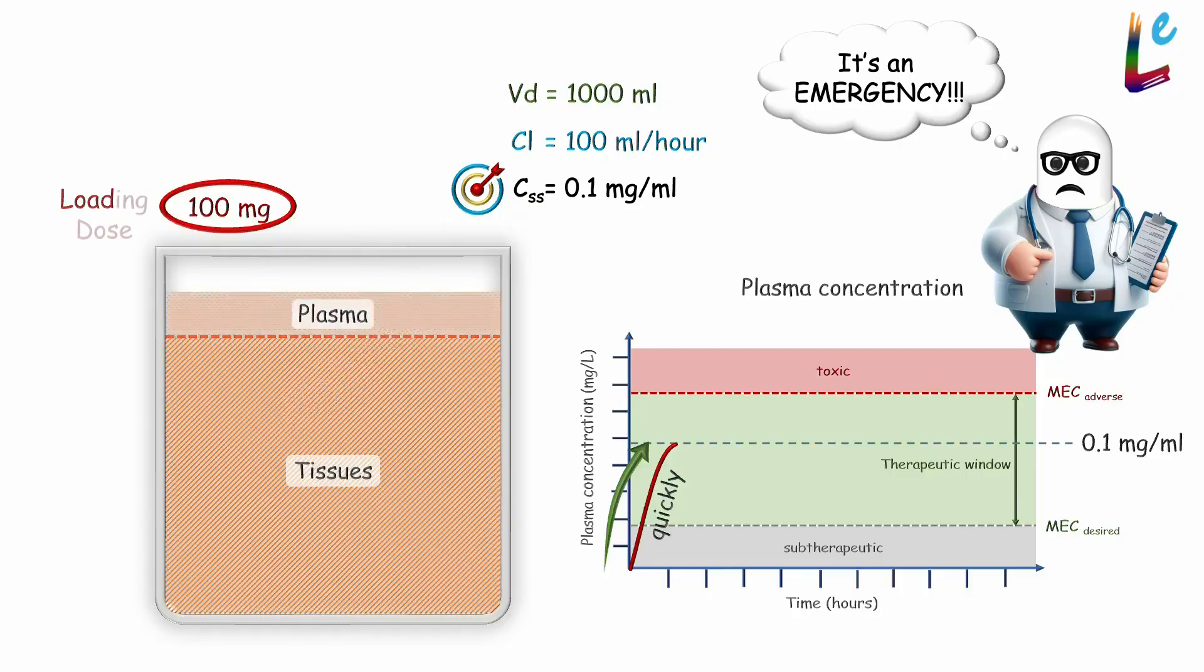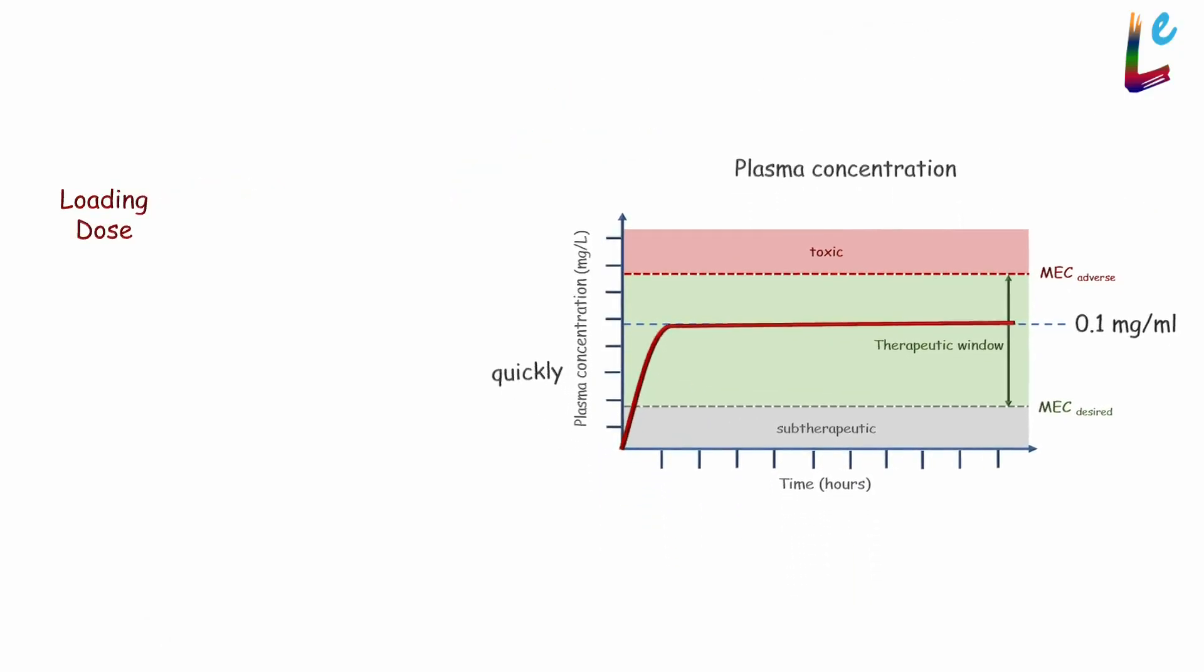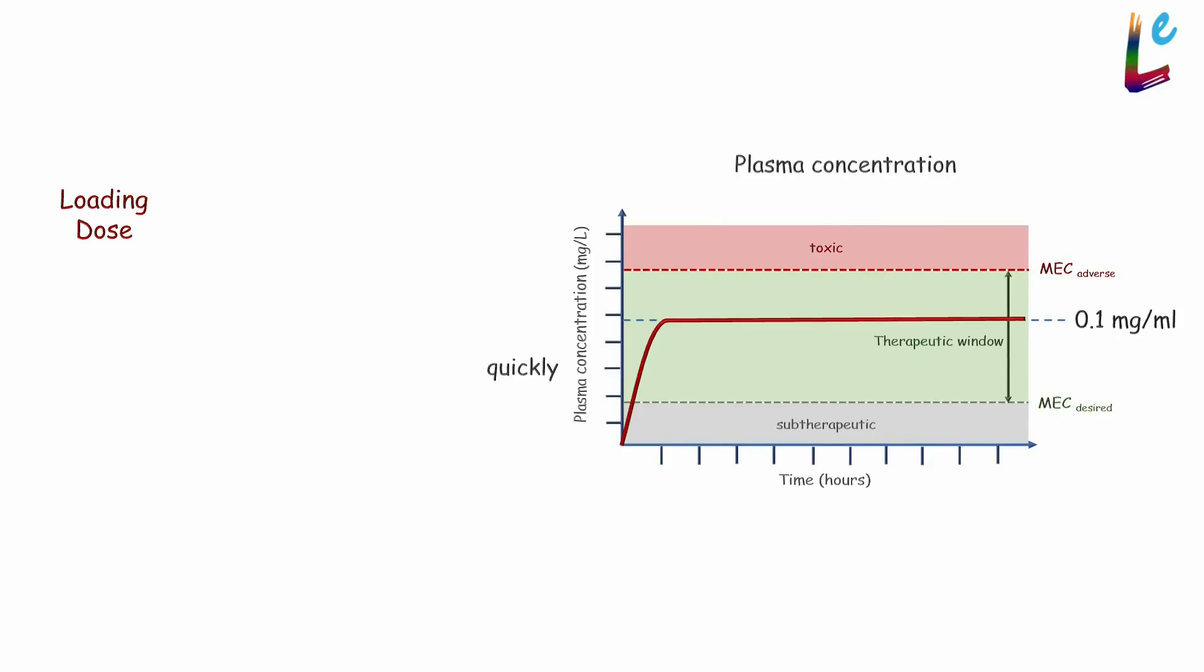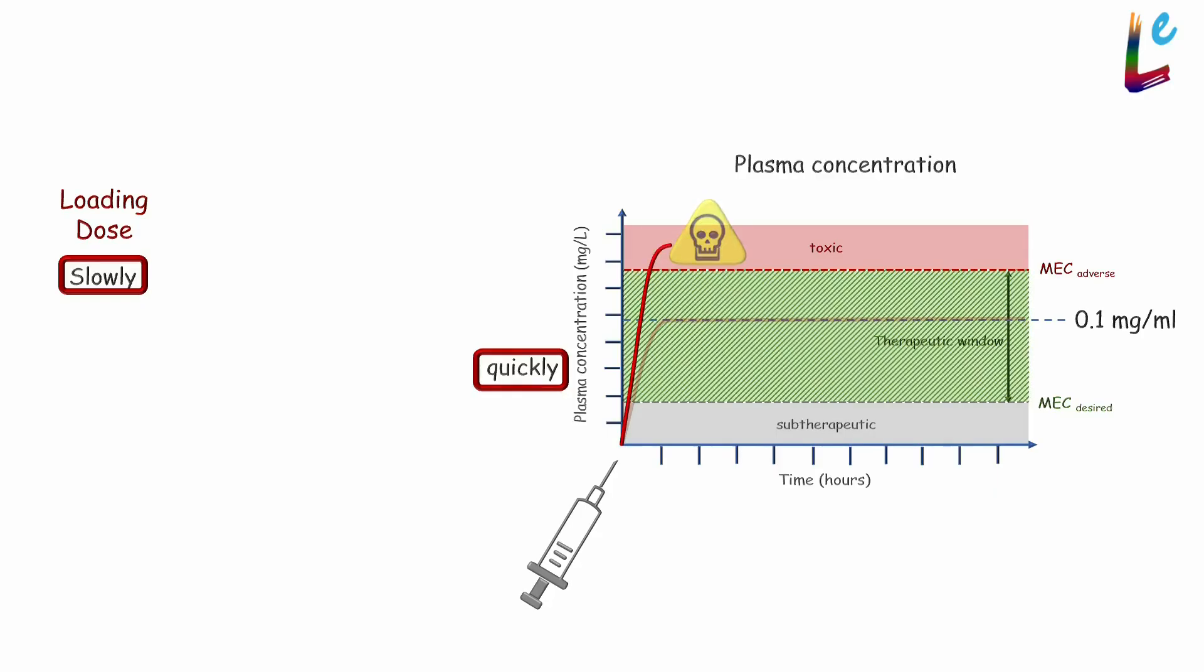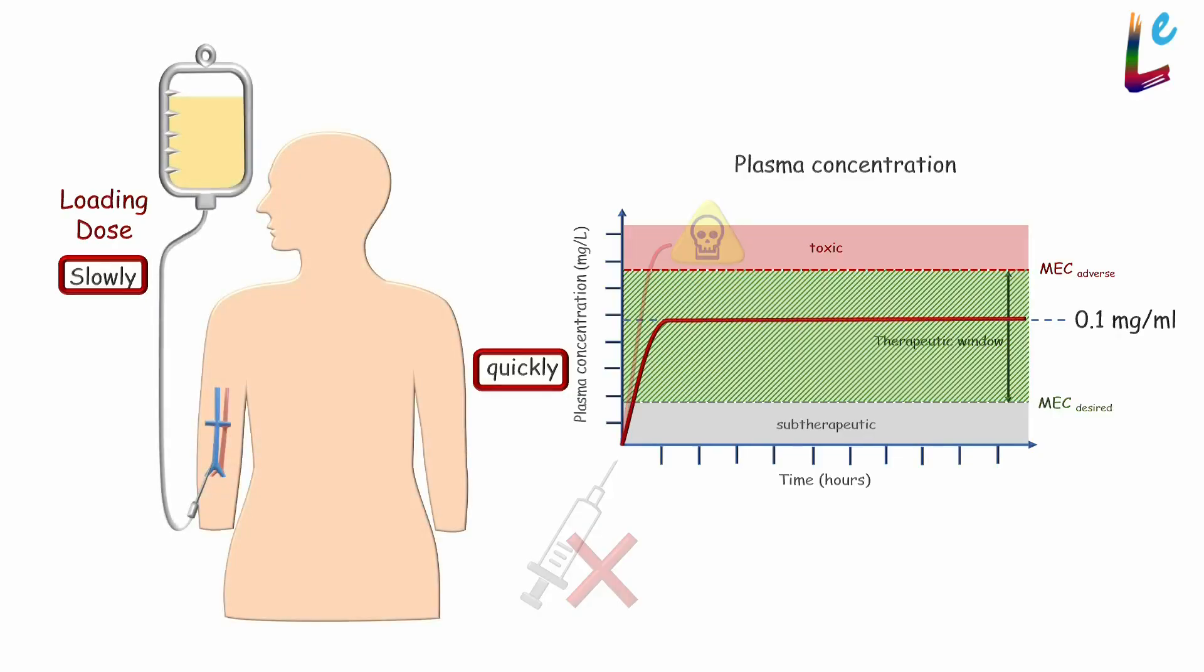Although the goal is to reach the target plasma concentration quickly, the loading dose is typically administered slowly. A rapid intravenous push can cause plasma concentration to overshoot the therapeutic window, which can cause serious adverse effects. Therefore, an IV loading dose is usually given as a rate-controlled continuous infusion.